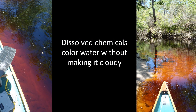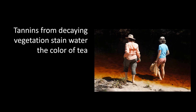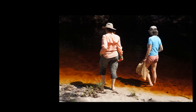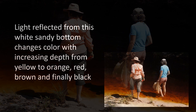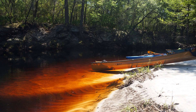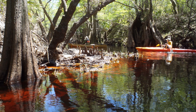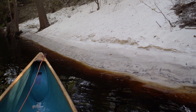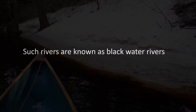Dissolved chemicals on the other hand can stain water without making it cloudy. Tannins from decaying vegetation add an orange or reddish tint. The white sandy bottom in the shallows shows the change in colour with depth, from yellow through red to brown and finally black. Unlike a suspension of particles that physically blocks and scatters light, a solution is translucent, and the colour acts as a filter to absorb other wavelengths of light. Because red light doesn't have the energy to penetrate deep into water, daylight doesn't penetrate far into tannin-rich water — deeper water appears black. Tannin-rich rivers like this one in Florida are often called blackwater rivers.